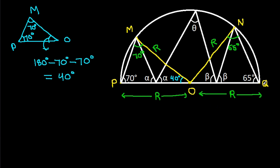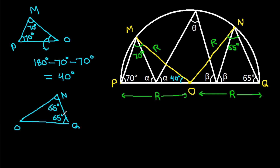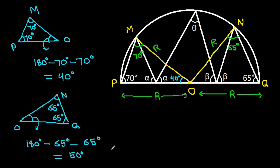And in triangle ONQ, this angle is 65 degrees and this angle is 65 degrees. So the angle at O will be 180 minus 65 minus 65, that will be equal to 50 degrees.